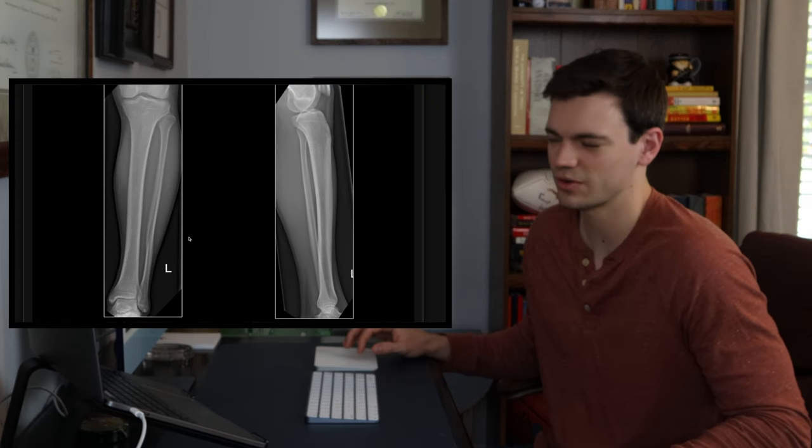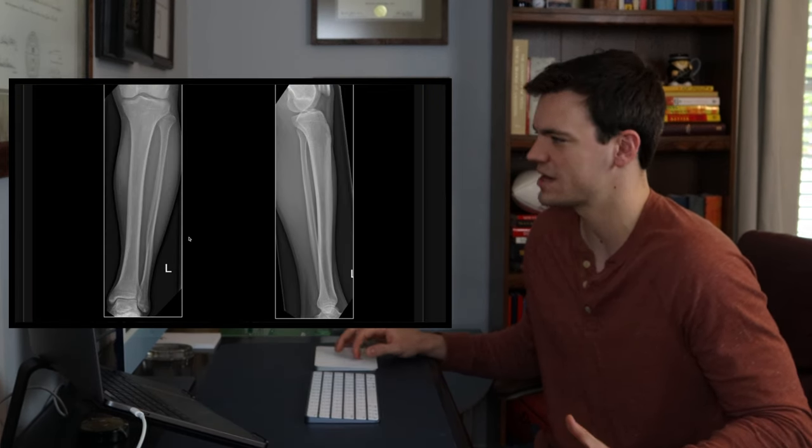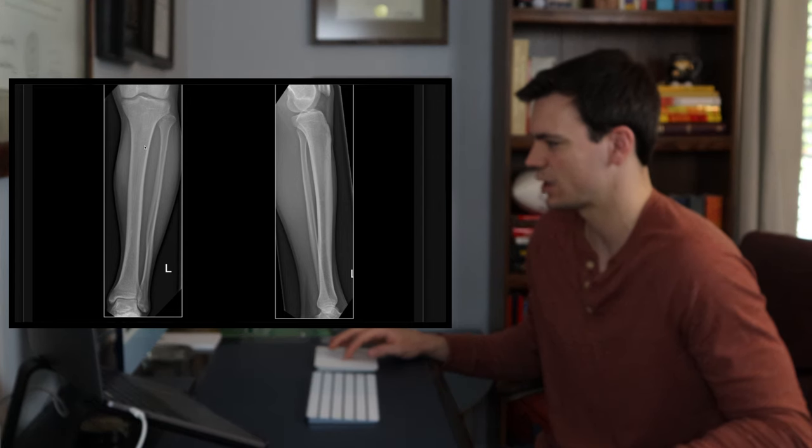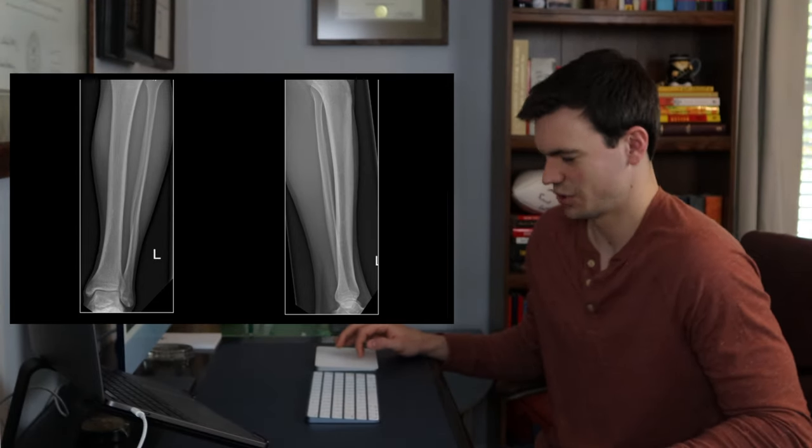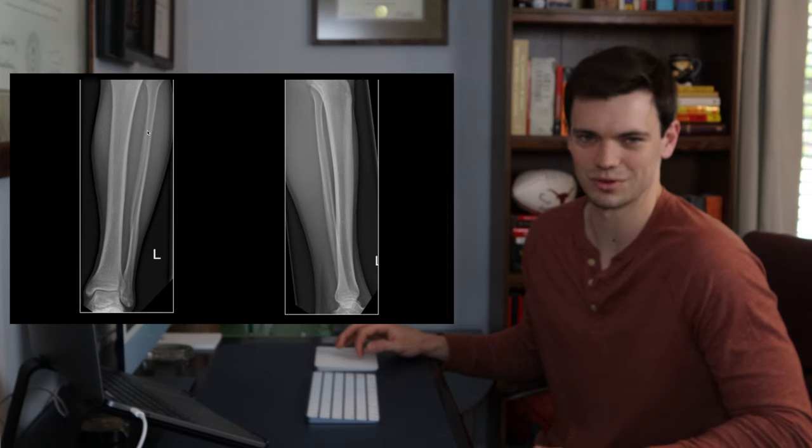So here's a normal x-ray, basically the same thing we just looked at. Here's the tibia, then here's the fibula running up along with it. Joe Theismann's leg looked like this before it was completely broken.